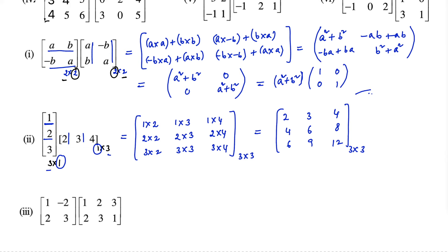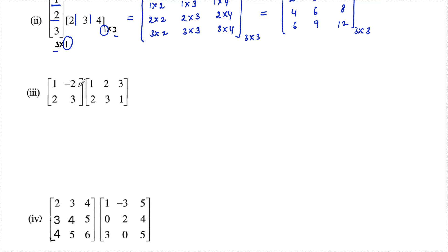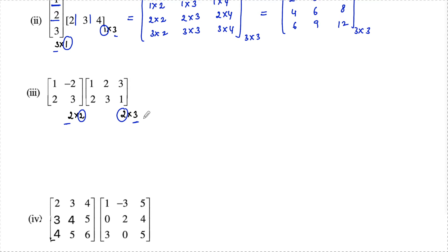Now let's see the third one. Two matrices: [1, −2; 2, 3] which is a 2 by 2 matrix, and [1, 2, 3; 2, 3, 1] which is a 2 by 3 matrix. Since the number of columns in the first matrix equals the number of rows in the second matrix, multiplication is possible and the order of the product matrix is 2 by 3.